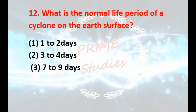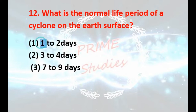What is the normal life period of a cyclone on the Earth's surface — 1 to 2 days, 3 to 4 days, or 7 to 9 days? Your answer is first: 1 to 2 days.